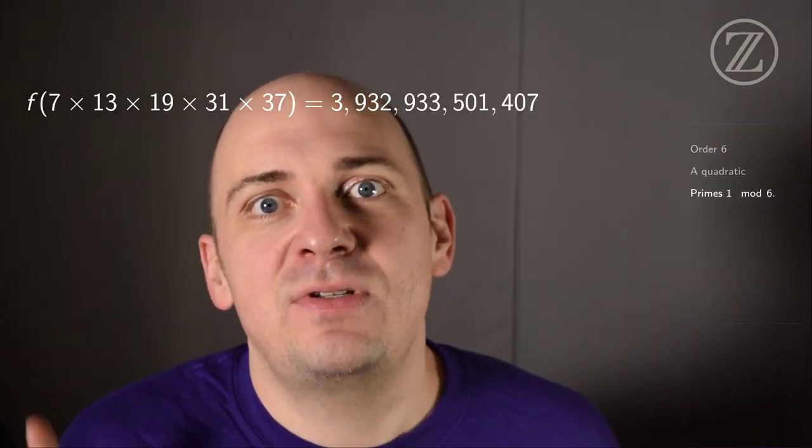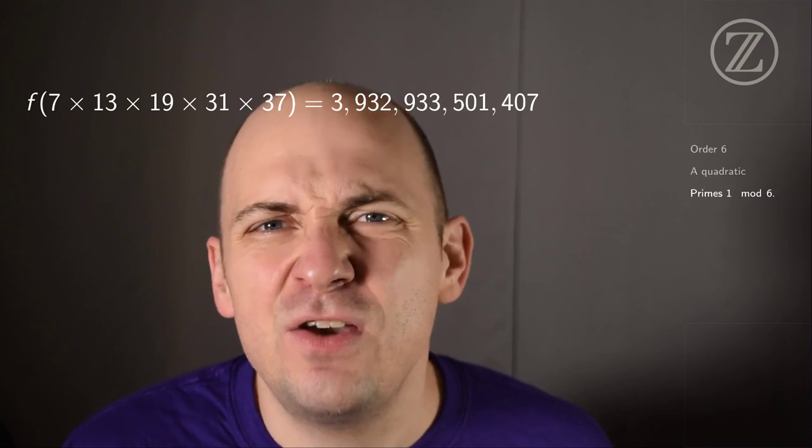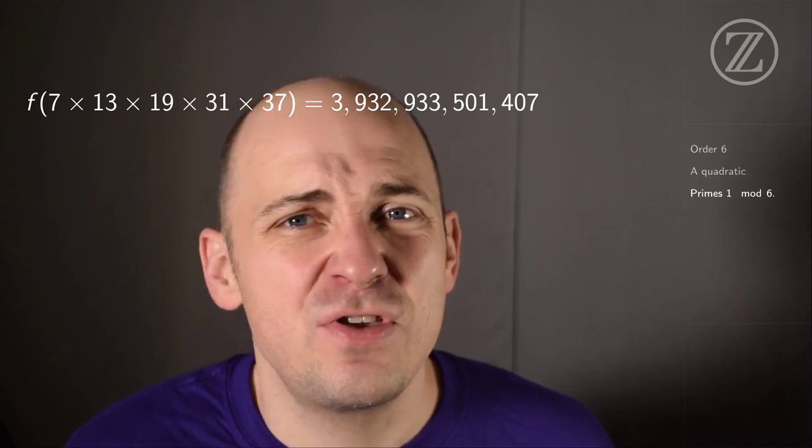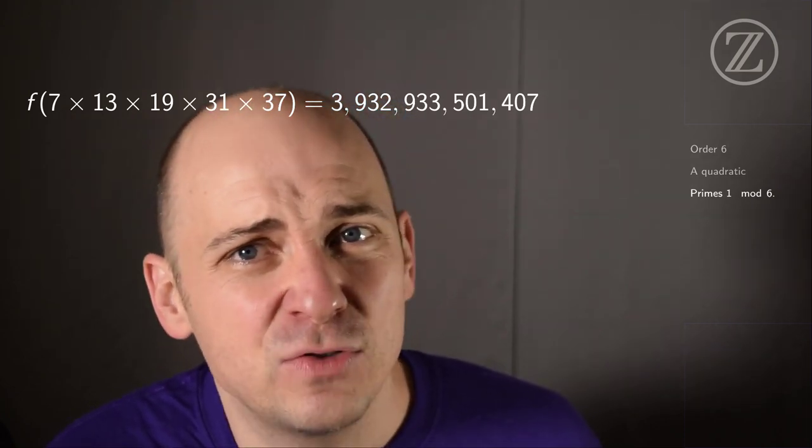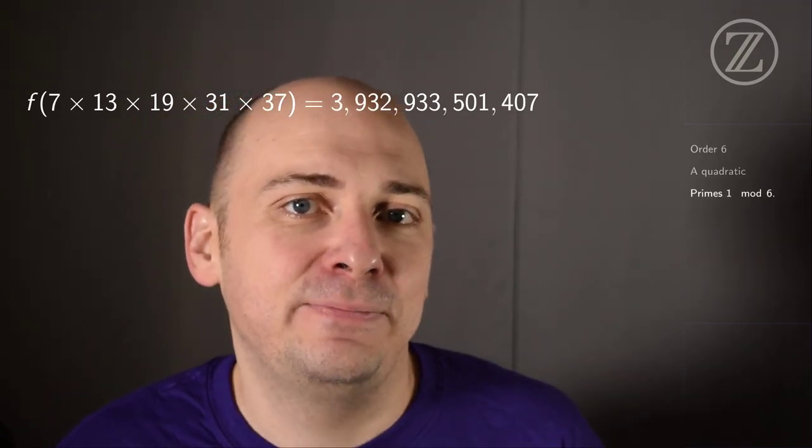It even guides us to finding more primes that are 1 mod 6. Instead of multiplying together 7 and 13 and 19 and 31 and 37 and then adding 1, we'll instead compute f of 7 times 13 times 19 times 31 times 37. And when we do that, we get 3,932,933,501,407, which is prime and 1 mod 6.